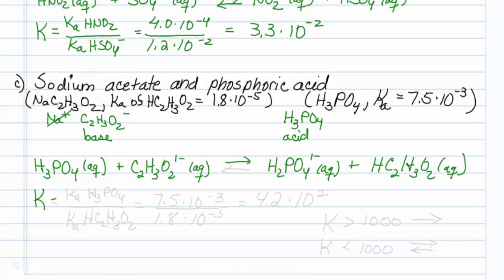Alright, now for our equilibrium constant. That would be the Ka of phosphoric acid over the Ka of the conjugate acid that I made, which is acetic acid. So this turns out to be 7.5 times 10 to the minus 3 divided by 1.8 times 10 to the minus 5, which is equal to 4.2 times 10 to the second power.